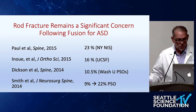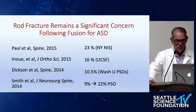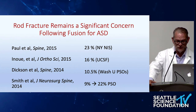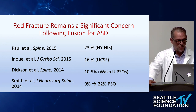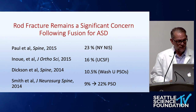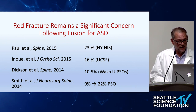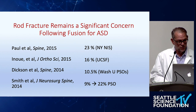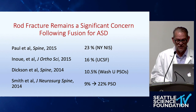Rod fracture remains a very significant concern and is a hallmark of nonunion or pseudoarthrosis following multi-segment fusions in adult spinal deformity in the thoracolumbar spine. There are a number of articles demonstrating a fairly high rate of that, including the one by Justin Smith and the ISSG, which shows 9% overall and a 22% rate of rod fractures around PSOs.